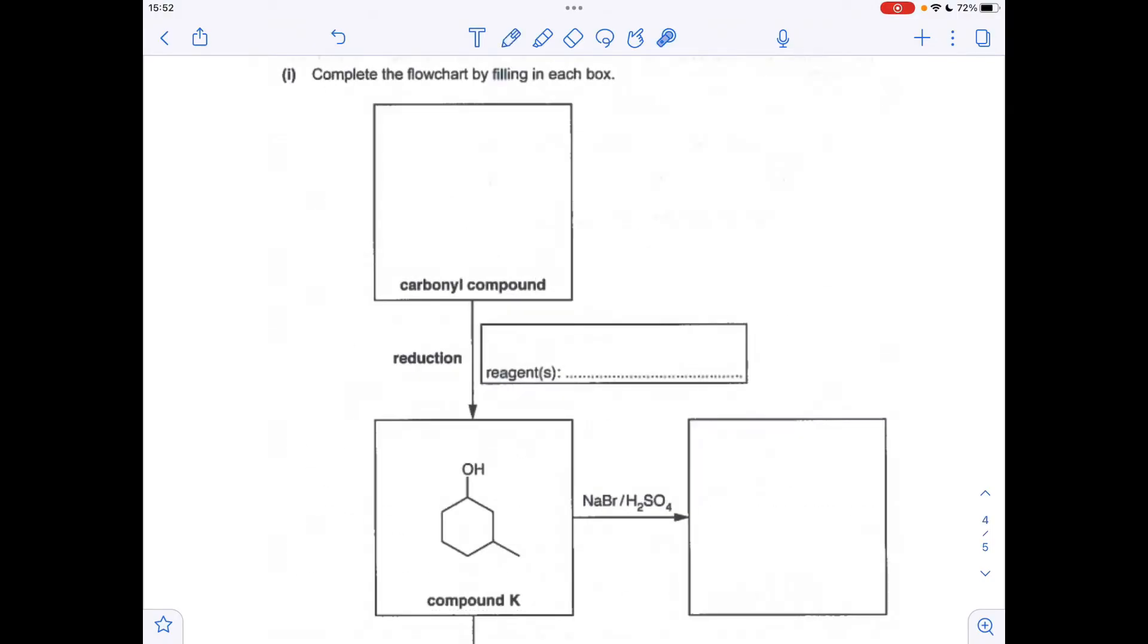Moving on to the flow chart now. Compound K is a secondary alcohol. What's reduced to a secondary alcohol? It's a ketone, so the carbonyl compound must be that there. What's the reagent that brings that change about? It's NaBH4.